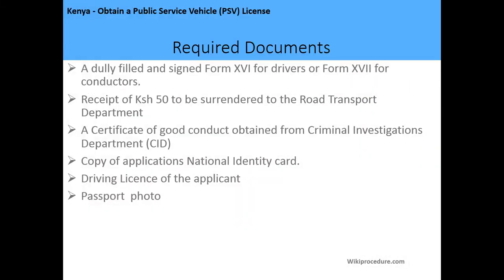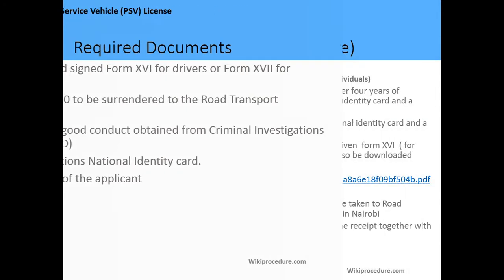The required documents include: a duly filled Form 16 for drivers and Form 17 for conductors; a receipt of 50 shillings for certification, which must be surrendered to the Road Transport Department; a Certificate of Good Conduct obtained from the CID Department; a copy of the applicant's national identity card; the applicant's driving license; and passport photos.